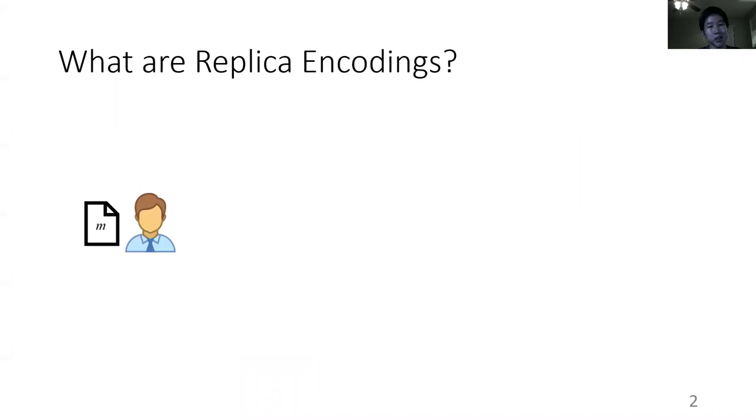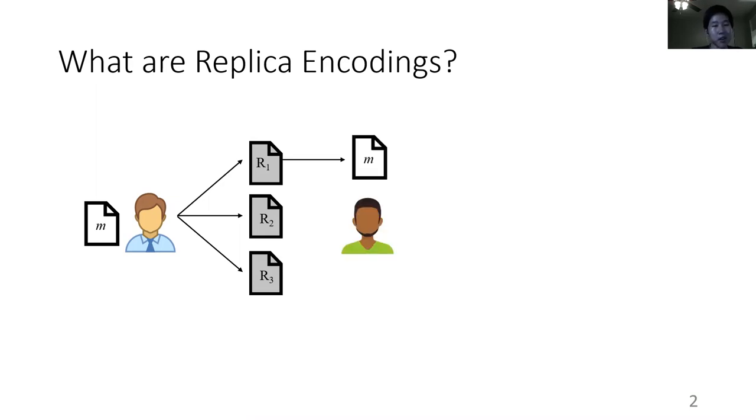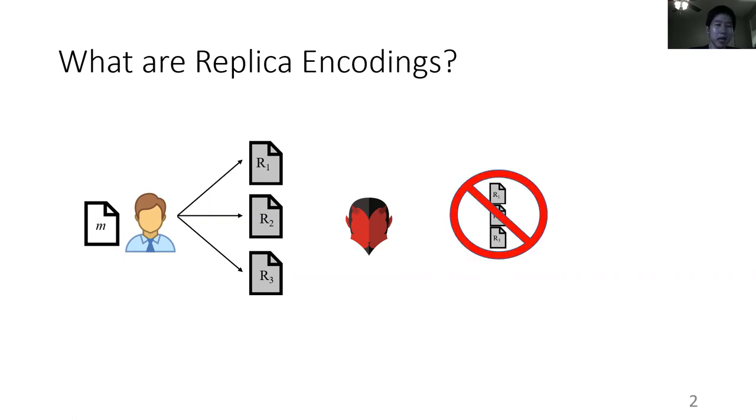Replica encodings are a primitive that were introduced in a paper last year by Damgard, Ganesh, and Orlandi. The idea is you have a client with a message, and he wants to produce several replicas of this message, where from each replica independently, you should be able to recover the original message. But say you have an adversary that takes a look at all of these replicas, he should not be able to compress them and store them in states significantly smaller than the size of the original replicas. This has some uses in decentralized file storage.